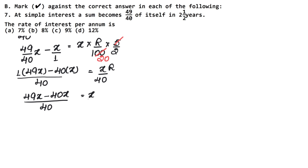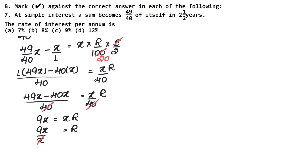We cancel the 'upon 40' from both sides. So 9x equals xR. Dividing both sides by x, we get R equals 9. So the rate is 9% per annum. The correct answer is option C.